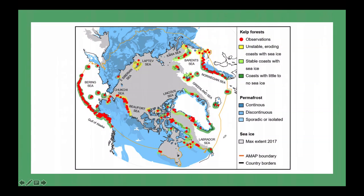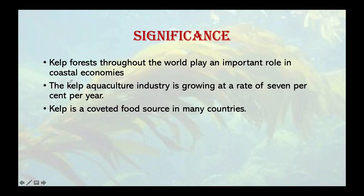Now let's look at the location of kelp forests in the Arctic region. This map is based on 1,179 scientific records. You can observe where kelps are found, where coasts are unstable and eroding with sea ice, where coasts are stable, and the extent of permafrost — whether continuous or discontinuous. Because of climate change, all these things are changing.